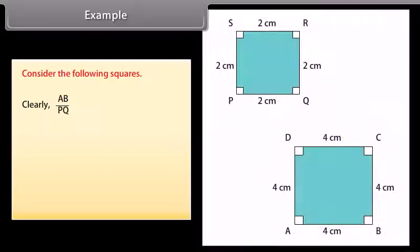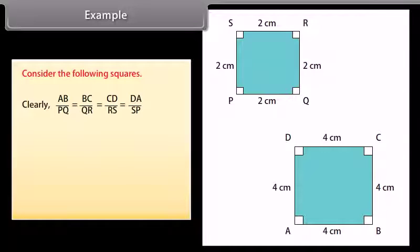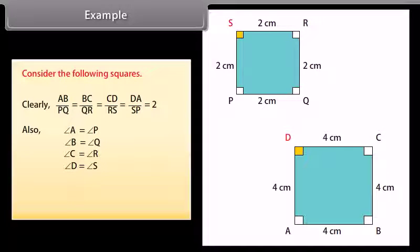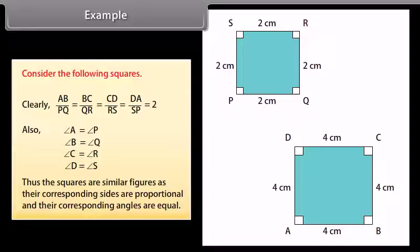Example: Consider the following squares. Clearly, AB upon PQ equals BC upon QR, which equals CD upon RS, equals DA upon SP, which is equal to 2. Also, angle A equals angle P, angle B equals angle Q, angle C equals angle R, angle D equals angle S. Thus, the squares are similar figures as their corresponding sides are proportional and their corresponding angles are equal.